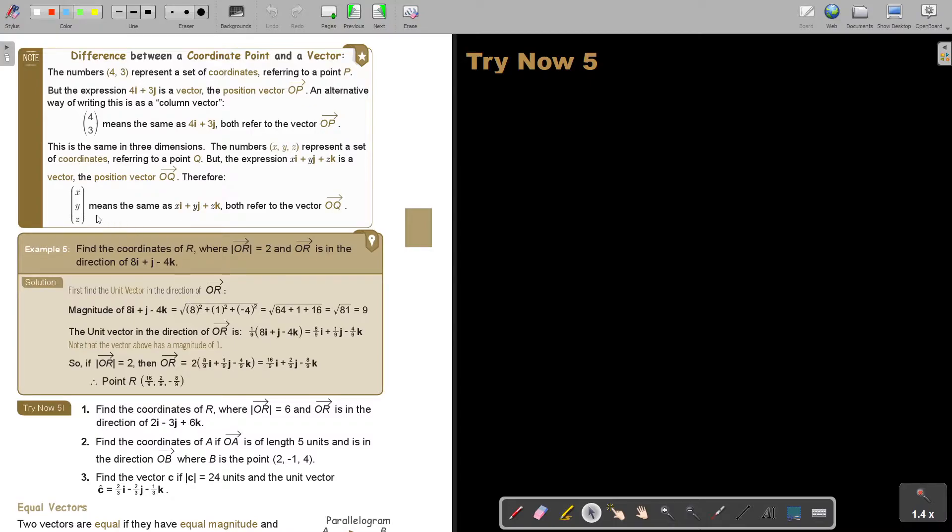With that in mind, let's look at the example. Find the coordinates of R, where OR is 2. OR is in the direction 8I plus J minus 4K. Let's find the unit vector in the direction of OR.